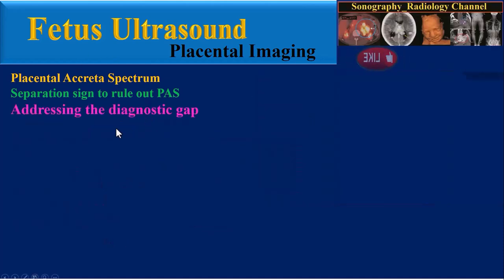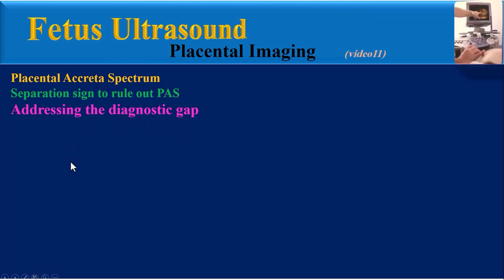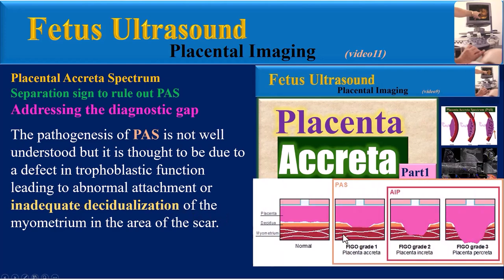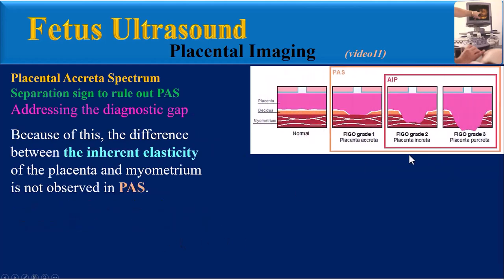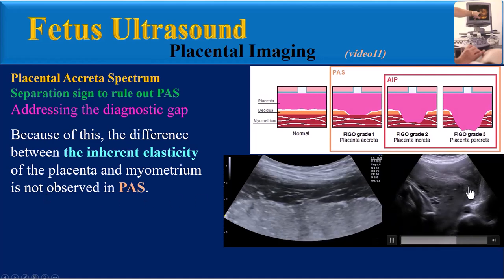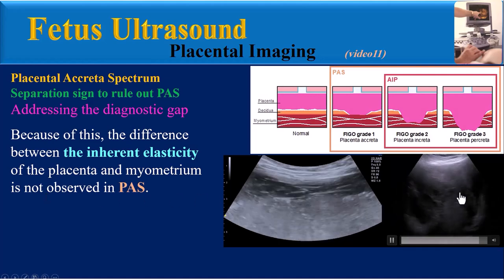How can the separation sign address a diagnostic gap in PAS diagnosis? As explained in video Part 1, the pathogenesis of PAS is not well understood, but is thought to be due to a defect in trophoblastic function leading to abnormal attachment or inadequate decidualization of the myometrium in the area of the scar. Because of this, the difference between the inherent elasticity of the placenta and myometrium is not observed in placenta accreta, as shown in this clip.